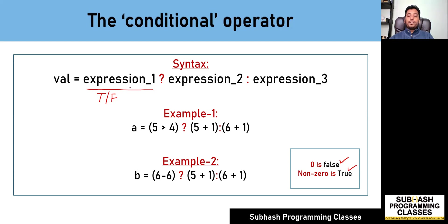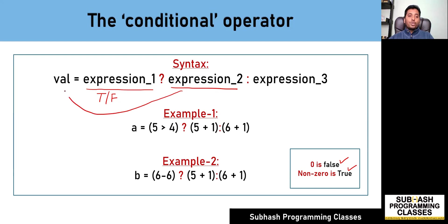So expression one must either result in a non-zero value or a zero value. If expression one results in a non-zero value — that is, if expression one results in a true condition — then expression two will be evaluated, and the result of expression two will get stored into val, and expression three will be ignored.